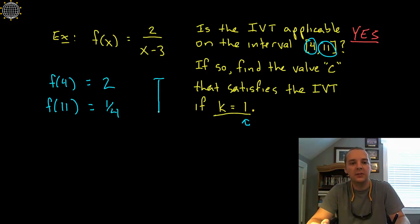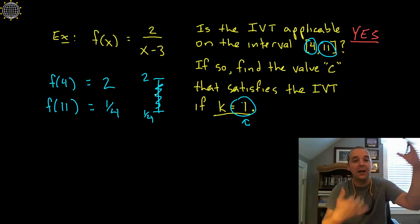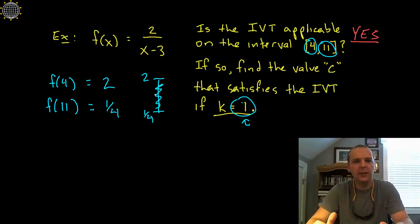And so we need to ask ourselves on a scale between a fourth and 2, is 1 somewhere in that scale? Because if the k value was outside that range, the intermediate value theorem still doesn't make sense, because we're supposed to be asking about y values between f(a) and f(b). And it is, yeah, so 1 is between 1 fourth and 2.